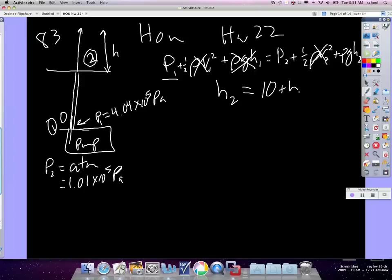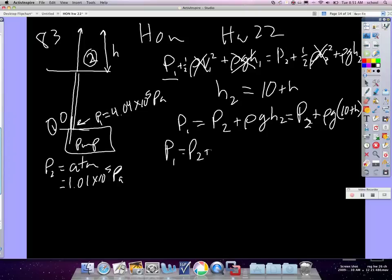So I'm kind of doing that. We'll see if it works. I mean, I'm just kind of doing this right now. So let's see. So what we're saying is P1 is going to equal P2 plus rho g h2. And that means P2 plus rho g times 10 plus h. So then P1 equals P2 plus 10 rho g plus rho g h.